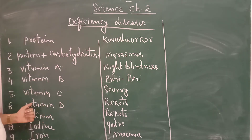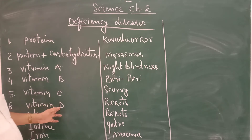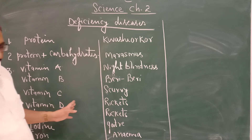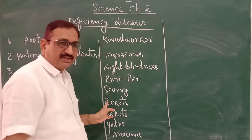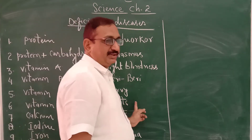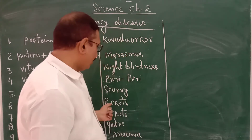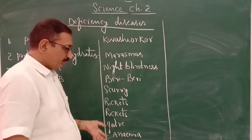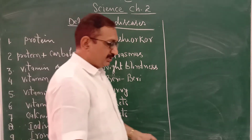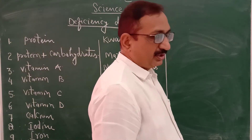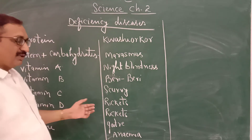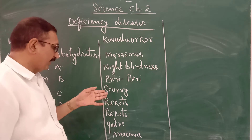After that, Vitamin D. Especially due to the lack of Vitamin D in the food diet, it leads to a disease that is rickets. In rickets, the bones become what? The bones become bent — the legs become bent. The bones become very weak and the muscles are also affected.